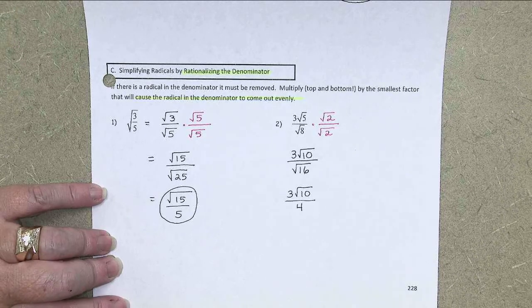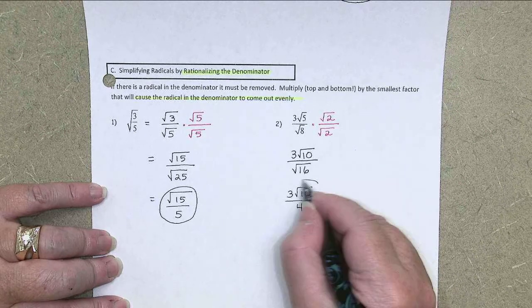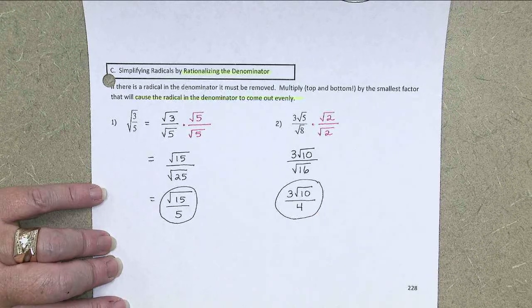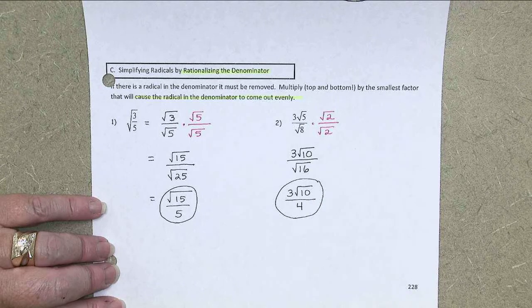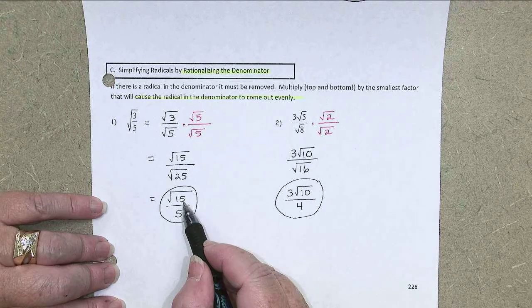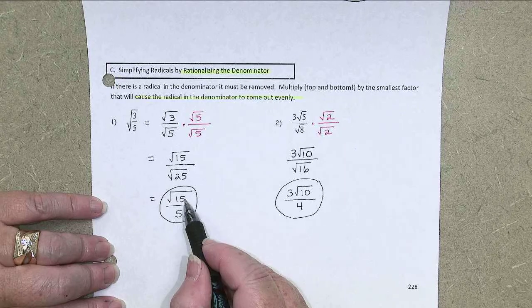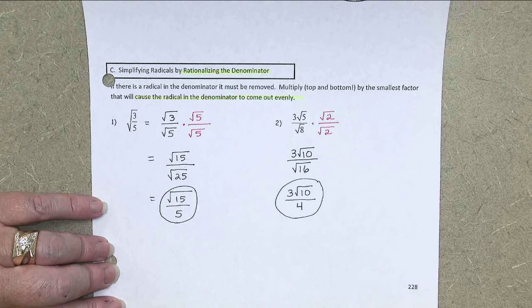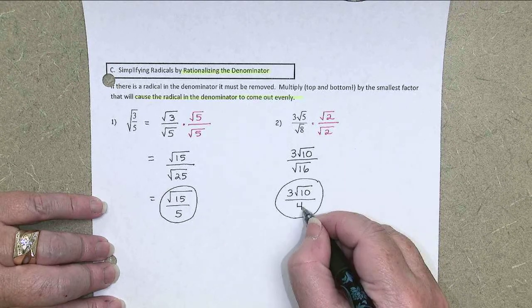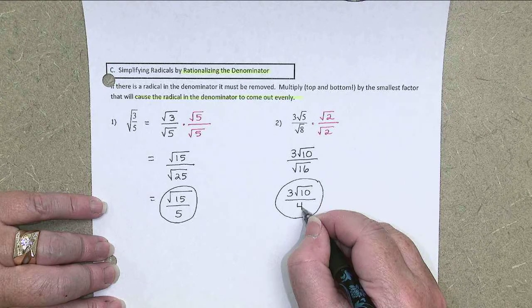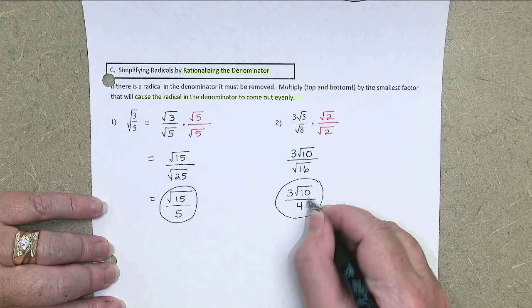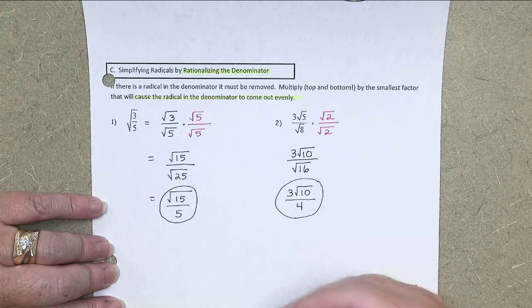By the way, one of the things we haven't talked about, and maybe we should have on both of these, is reducing a final answer. Because the 15 is in the radical and the 5 is not, it's not okay to divide both of those by 5. Same thing here. 10 and 4, 10 is inside the radical. 4 is not. I can't reduce.